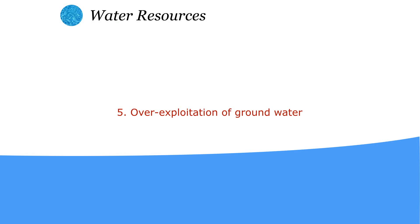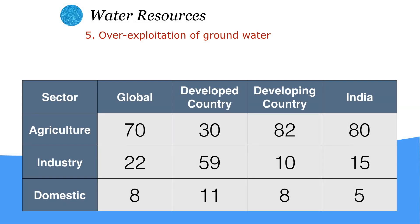Over-exploitation of groundwater occurs when we extract too much groundwater compared to its filling rate. We generally use water for three main purposes: agriculture, industries, and domestic use. In the global scenario, almost 70 percent of water is used for agriculture and 22 percent for industries. In developed countries, 59 percent is used for industries and 30 percent for agriculture. In developing countries and in India, almost 80 percent is used for agriculture, 15 percent for industries, and only 5 percent for domestic uses.